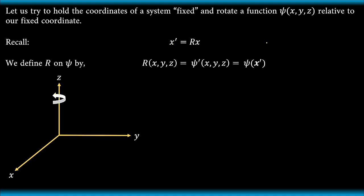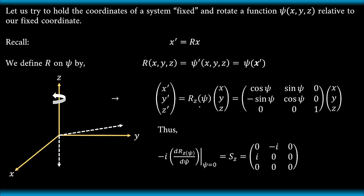Now, just imagine that we rotate this coordinate system in three dimensions with respect to the z-axis by an angle, say angle ψ. So we can denote this rotation matrix or rotation operator as R_z, basically because this is with respect to the z-axis. We have x prime, y prime, z prime as the new coordinates, or in terms of the Dirac notation, we can write this as R prime ket, and this is equal to the rotation matrix times the unrotated coordinate system.